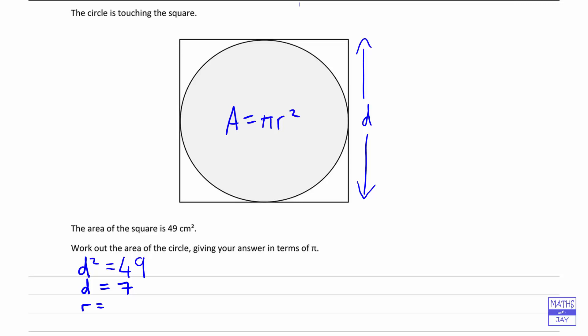And because we were asked to give the answer in terms of pi, I think it's going to be easier to leave the fraction as a top-heavy fraction. So I'll write that as 7 over 2.